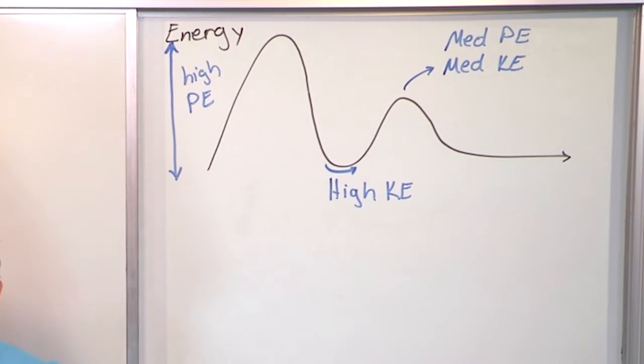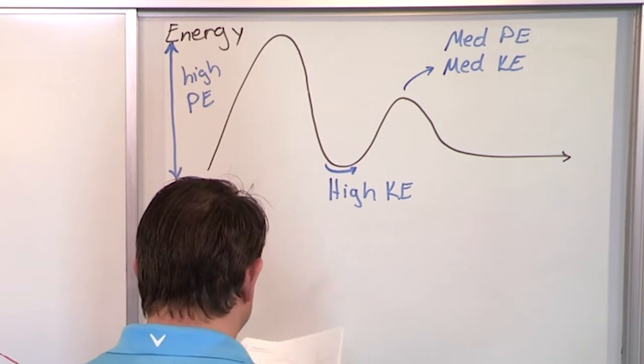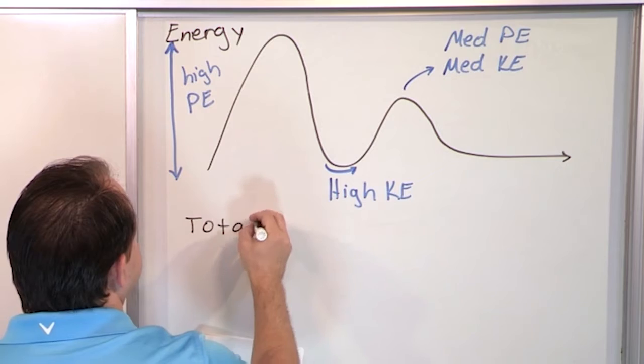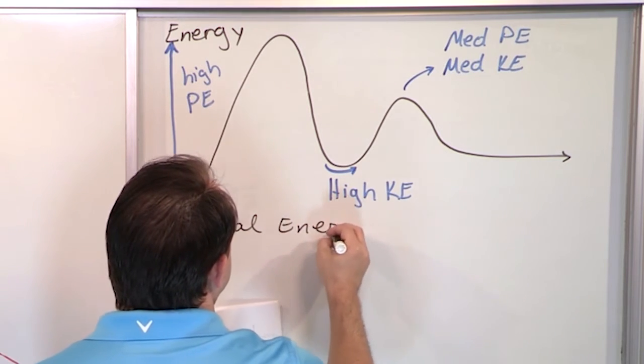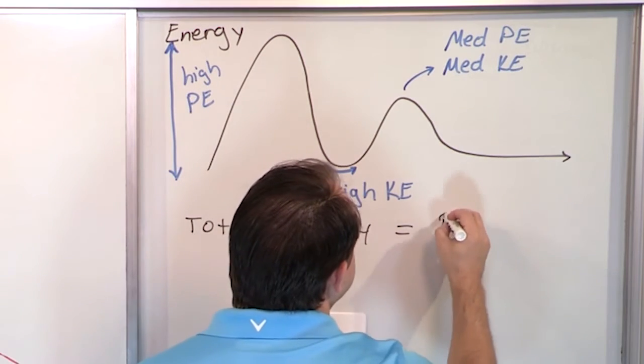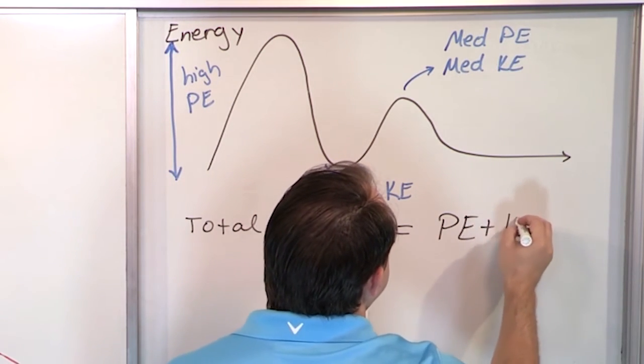So one of the big, big, big, big, big things we're going to do in physics is we're going to talk about the total energy of a system. And the total energy of a system that moves like this anyway, is the potential energy plus the kinetic energy.